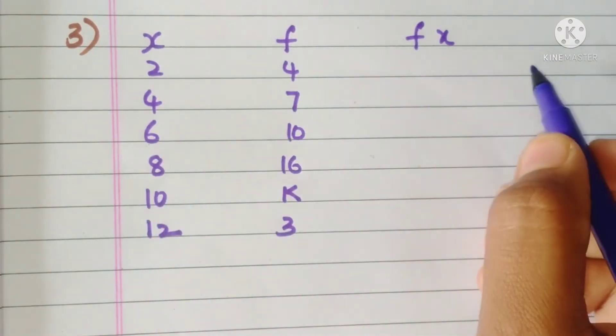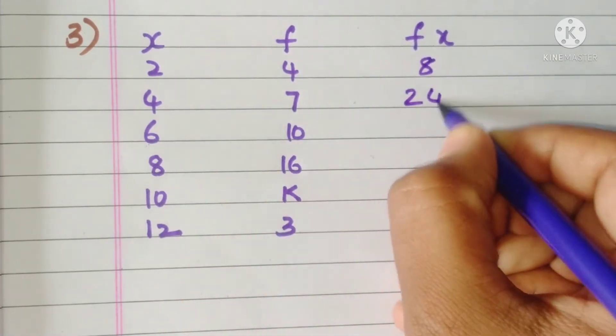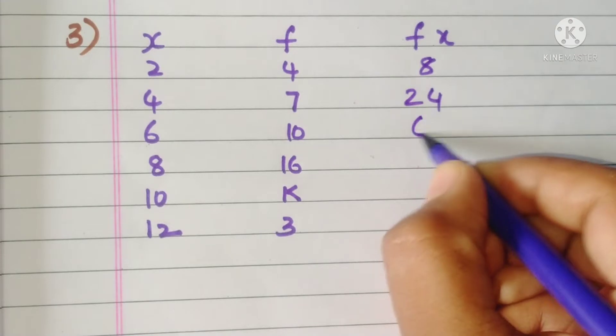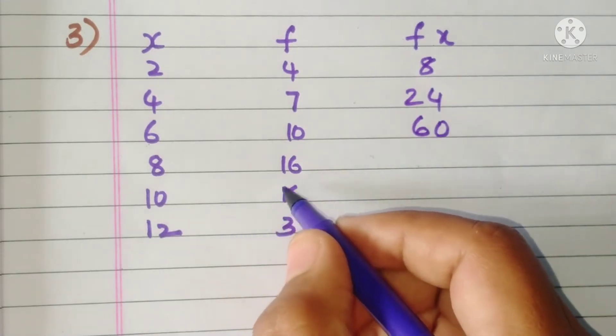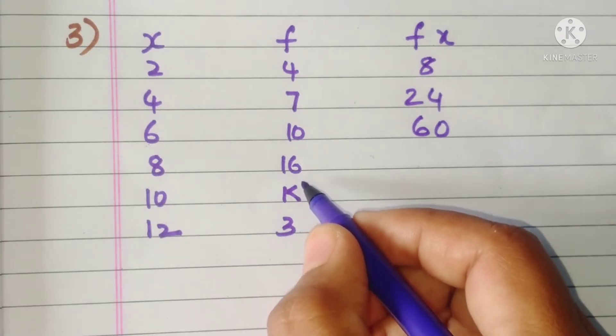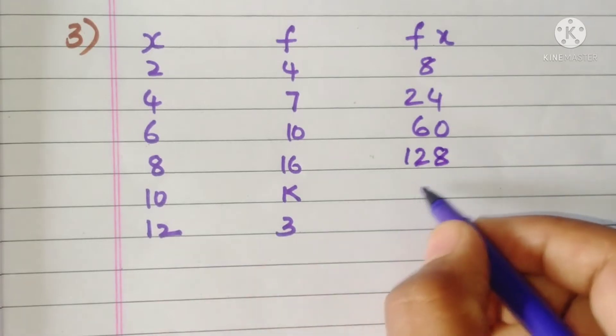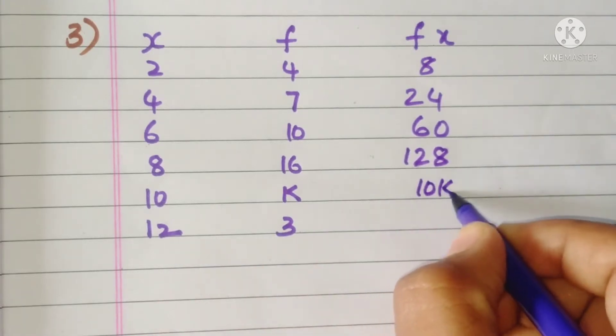We want to find out fx. 2 times 4 is 8, 7 times 4 is 24, 10 times 6 is 60, 16 times 8 is 128.